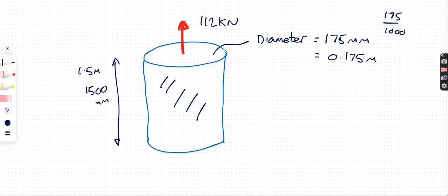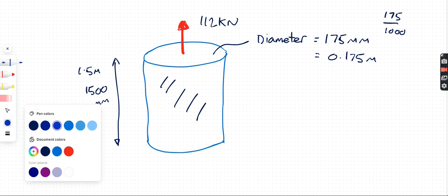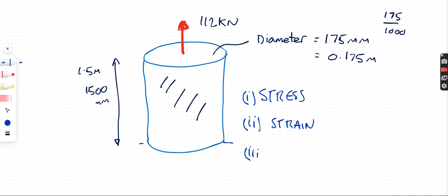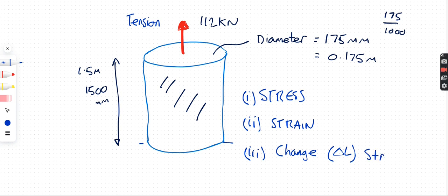We need to find three things: first, the stress due to the force; second, the strain the bar is under; and third, the change in length — delta L — which tells us how much the bar stretches because it's in tension.